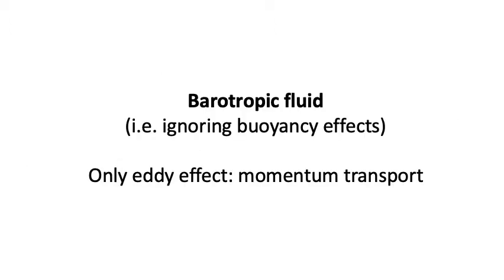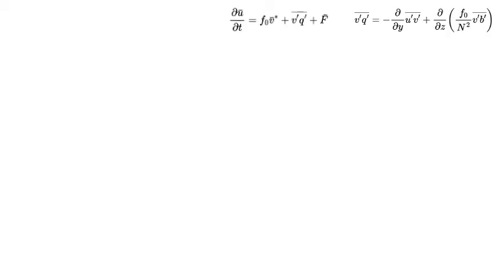We're going to start off by talking about a barotropic fluid. As a reminder, barotropic just means there are really no buoyancy variations, so we're able to ignore buoyancy effects. Another way to think about this is as a vertical mean — even though our atmosphere is baroclinic, you can think about the vertical mean as the barotropic component of our atmosphere. So the only eddy effects are from momentum transport.